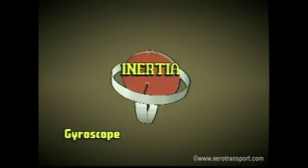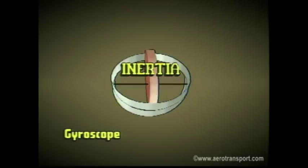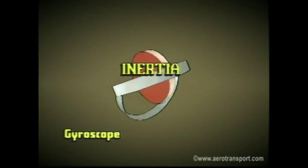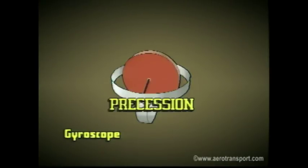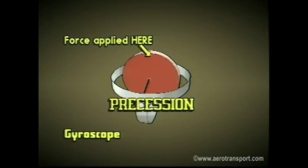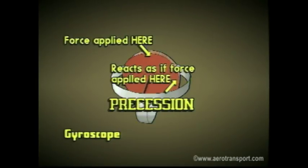Gyroscopic inertia means the rotor will remain fixed regardless of how the base of the gyroscope is moved. Precession occurs when a force is applied to a spinning object. Simply put, the spinning object will react as if the force had been applied at a point 90 degrees from where it was actually applied.